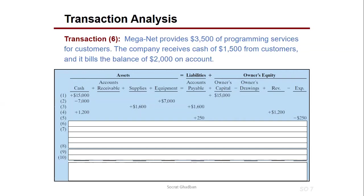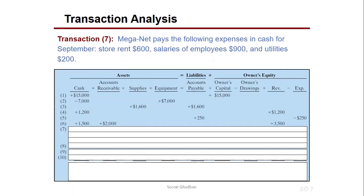Transaction 6: MEGANET provides $3,500 of programming services. The company receives $1,500 cash and bills the remaining $2,000 on account — meaning the service was delivered but part of the payment will come later. Cash increases by $1,500, accounts receivable increases by $2,000, totaling $3,500 in revenue on the other side of the equation.